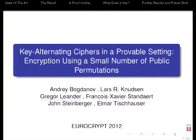The first talk is 'Key Alternating Ciphers in a Provable Setting: Encryption Using a Small Number of Public Permutations.' The authors are Andrej Bogdanov, Lars Knudsen, Gregor Leander, François-Xavier Standaert, John Steinberger, and Elmar Tischhauser. Gregor will be giving the talk.